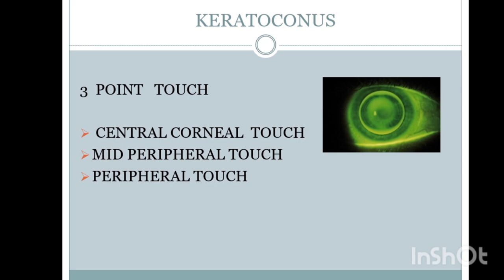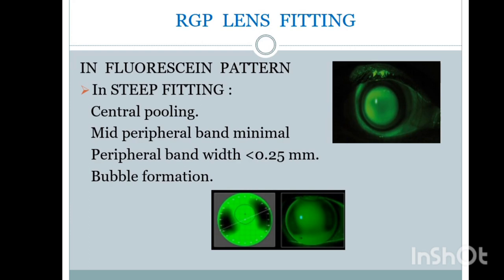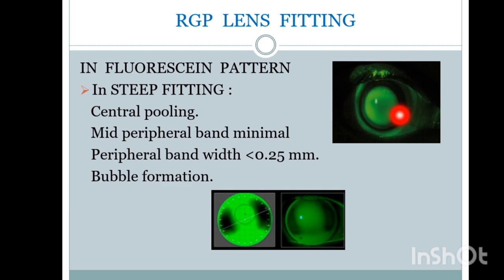If the fit is like this, your job is done — the patient will have excellent vision and excellent comfort with the contact lenses. Coming to steep fitting: in steep fitting there is central pooling. The central portion is filled with fluorescent dye, meaning the lens is steep. The mid-periphery and peripheral portion are touching the cornea, and the central portion is not touching — it is held high above, which is why fluorescent dye accumulates there.